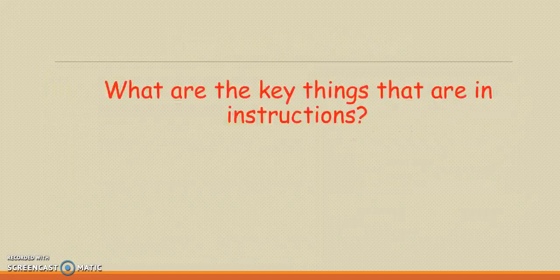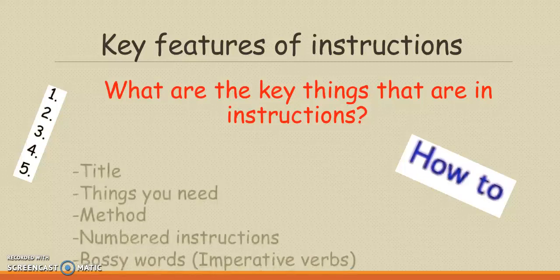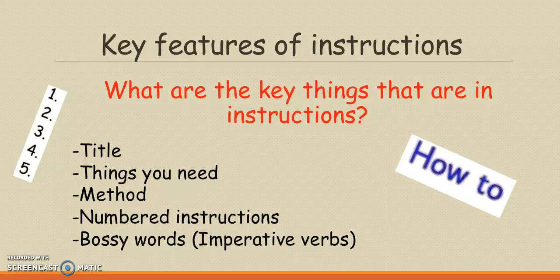So what are the key things that are featured in instructions? Are there different things that you might realise are in most instructions? Most instructions have a title at the beginning telling us what we need to know and what the instructions are for. There will also be a list of things you need — for example, if you were making a cake, there would be a list of ingredients. And then there will be a method which tells you what to do.